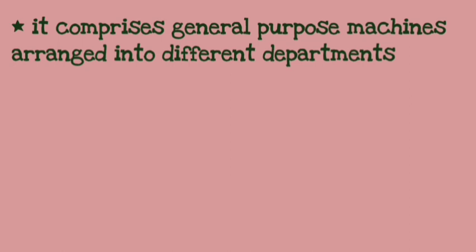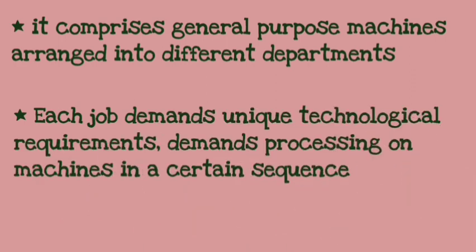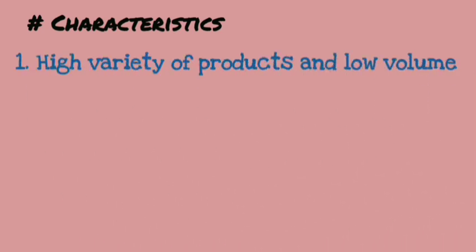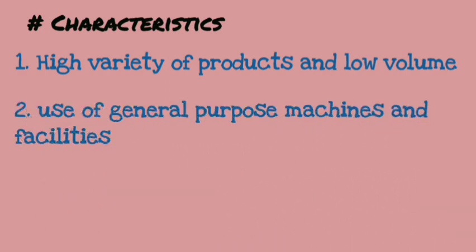These general purpose machines are arranged in different departments. Every job has unique technological requirements and is processed in a particular sequence to produce the output. The variety of products is high but the volume is low.